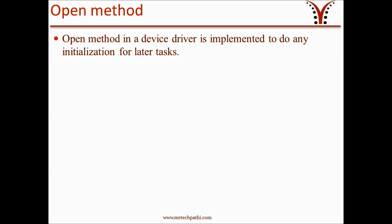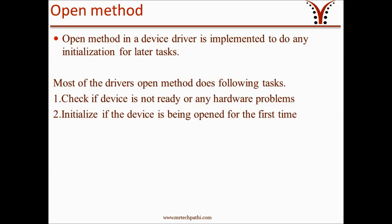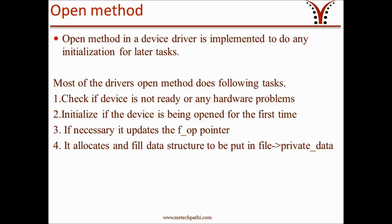What is the purpose of the open method? Open method in a device driver is implemented to do any initialization for later tasks. Open method does the following tasks: First, it checks if the device is not ready and checks if there are any hardware problems. Second, it initializes the device driver if the device driver is opened for the first time. Third, if necessary, it updates the f_op pointer. Fourth, it allocates and fills a data structure to be put in the file pointer's private data. These are the four basic tasks done by the open method.